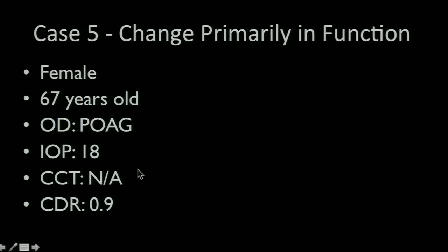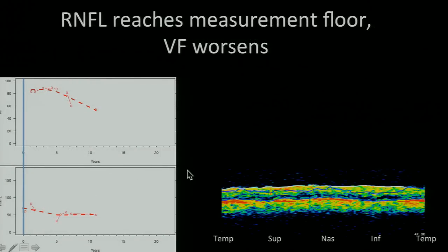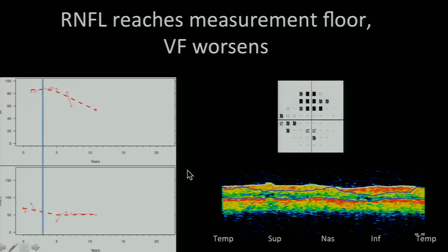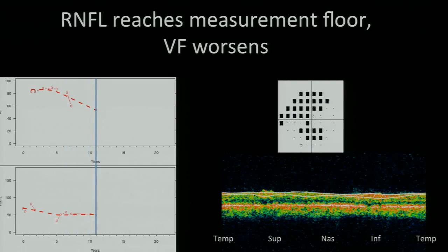Here is somebody who's changing primarily by function. So as the nerve fiber layer thickness reaches the measurement floor, you stop having change in the nerve fiber layer, but you continue to have deterioration of the visual field.